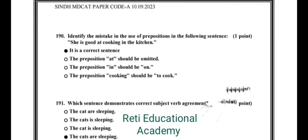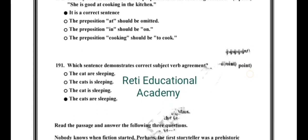Question number 190. Identify the mistake in the use of prepositions in the following sentence. She is good at cooking in the kitchen. And the correct option is it is correct sentence.